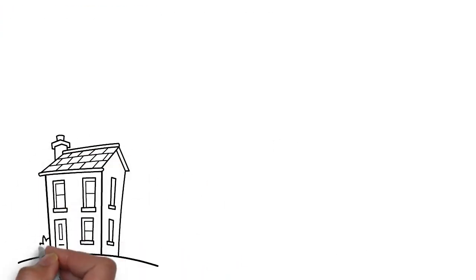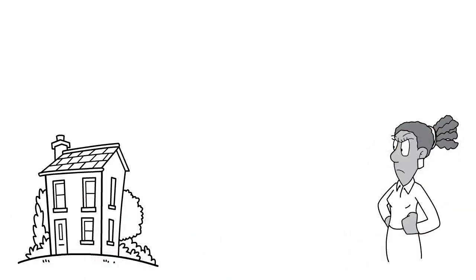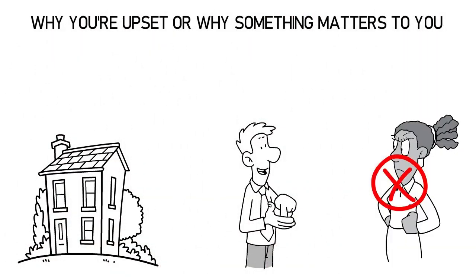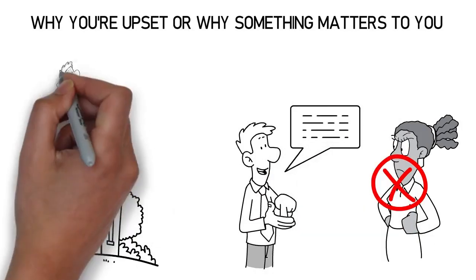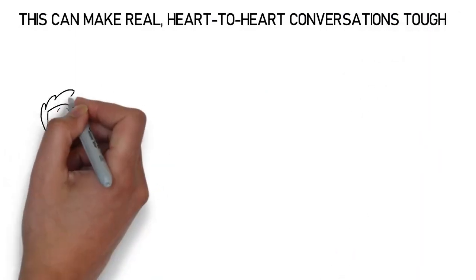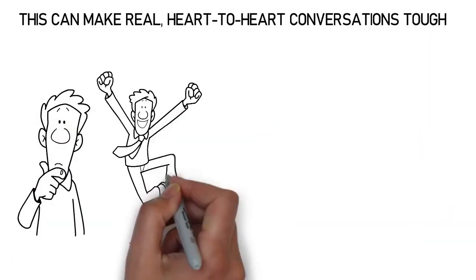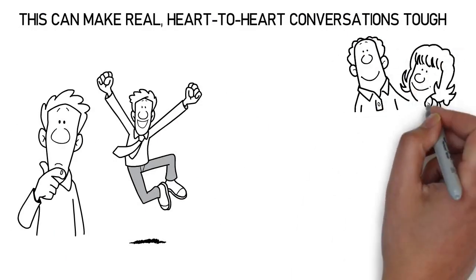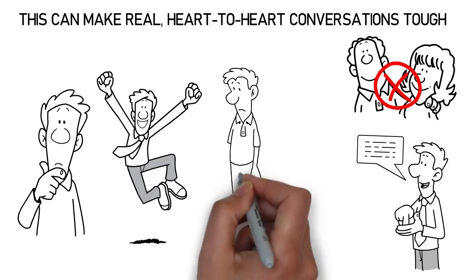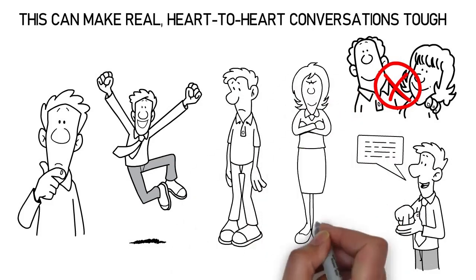At home, though, it's a different story. That lack of real, deep empathy starts to show. It's not just that she's not listening. It's that she doesn't get why you're upset or why something matters to you. And trying to explain it? It can feel like talking to a brick wall. This can make real heart-to-heart conversations tough. You want to share, to connect on something that's bothering you or something you're excited about. But if the empathy's not there, it's like your words just bounce off. And that can leave you feeling pretty alone, even when she's right there with you.